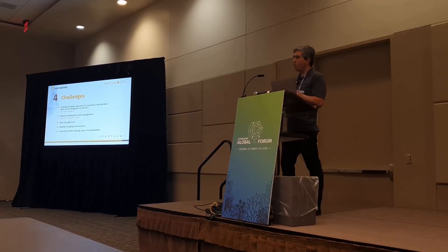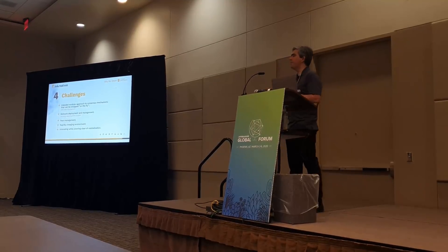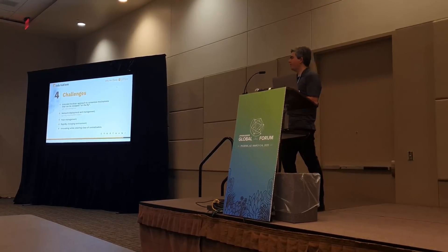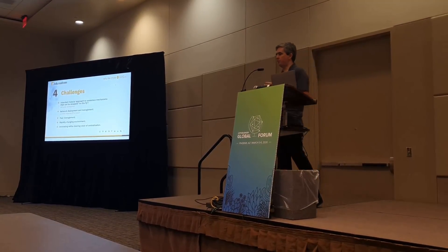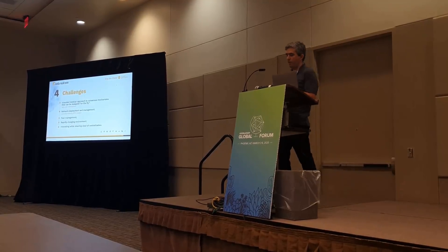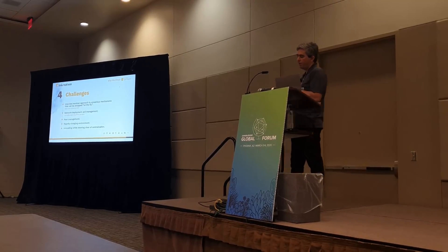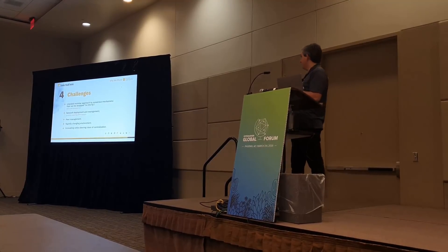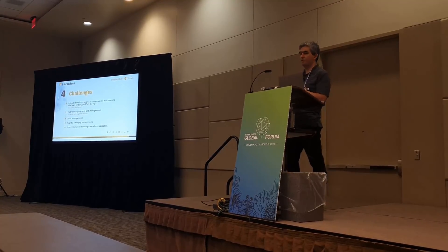Right now we're using PBFT consensus. We were very keen on using Proof of Elapsed Time, which was supposed to be one of the big additions from Sawtooth, but it's not fully operational at the moment, so we had to stick with PBFT and hope to change it in the future. PBFT requires a known, static list of members beforehand, so managing that static peering needs frequent configuration and reconfiguration — challenges we're dealing with on a day-to-day basis. For the current size of the network we can deal with it, but we need to be prepared as we grow.